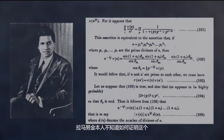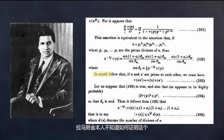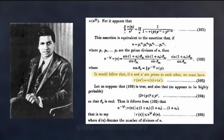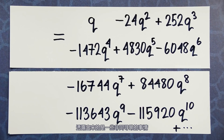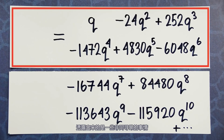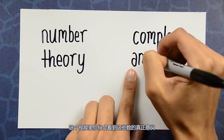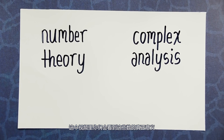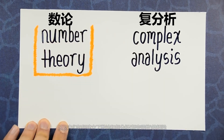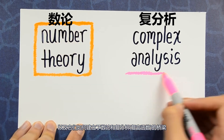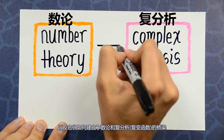Ramanujan himself didn't know how to prove this, and he conjectured it in what is now a very famous 1916 paper. What we now know is that Ramanujan's identity is reflective of the fact that these are no ordinary numbers — they actually contain some very deep meaning. In this video, we'll see what the true meaning of these numbers is, and how they form a bridge between number theory and complex analysis.